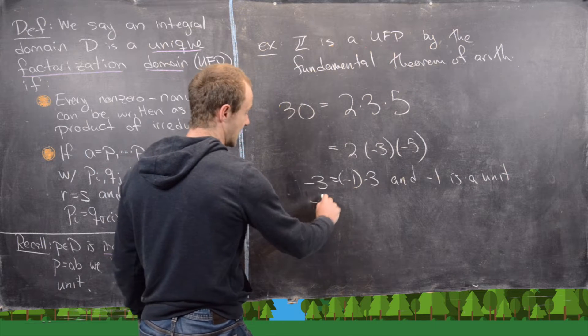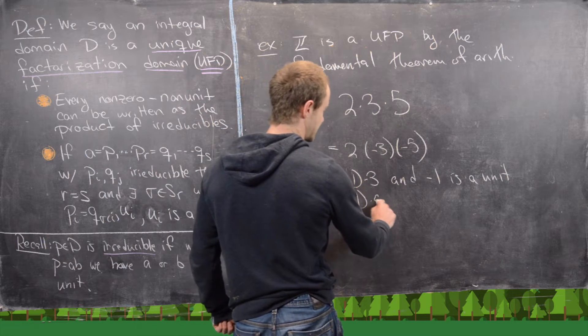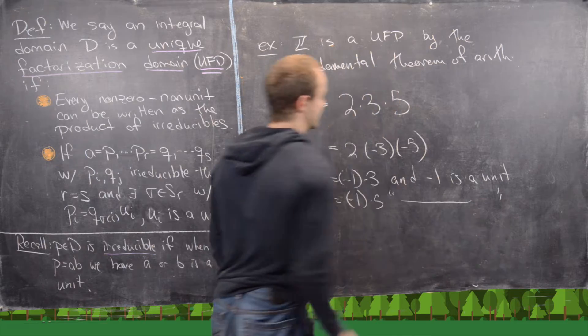But notice this is the same because negative 3 equals negative 1 times 3, and negative 1 is a unit. And furthermore, negative 5 equals negative 1 times 5, and negative 1 is a unit.